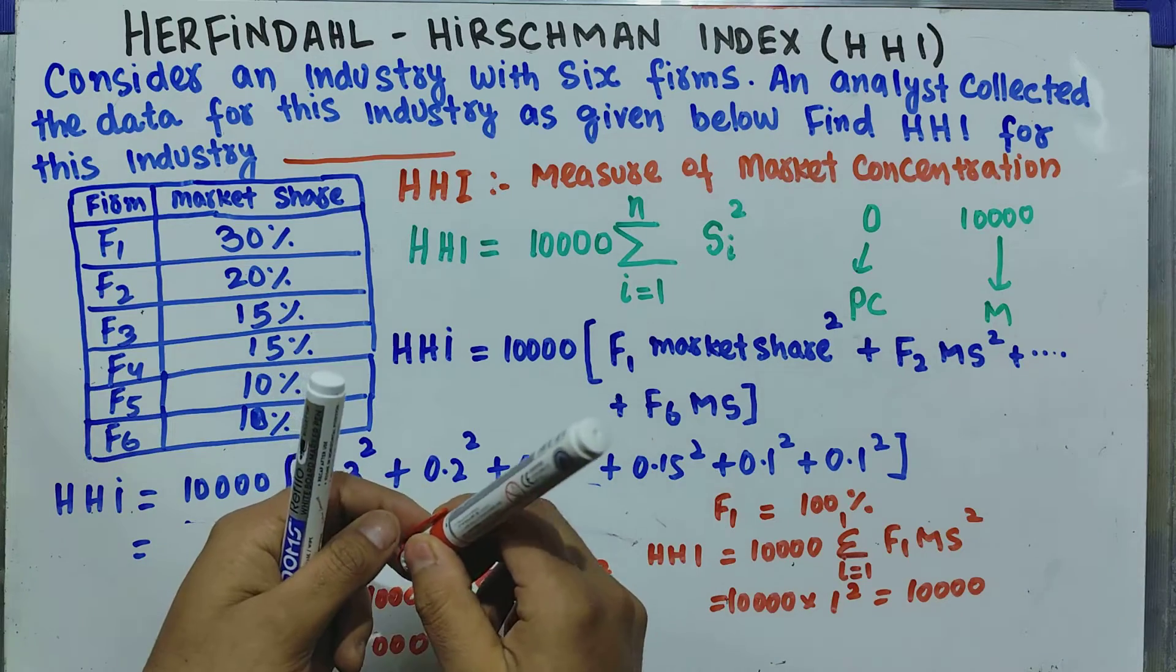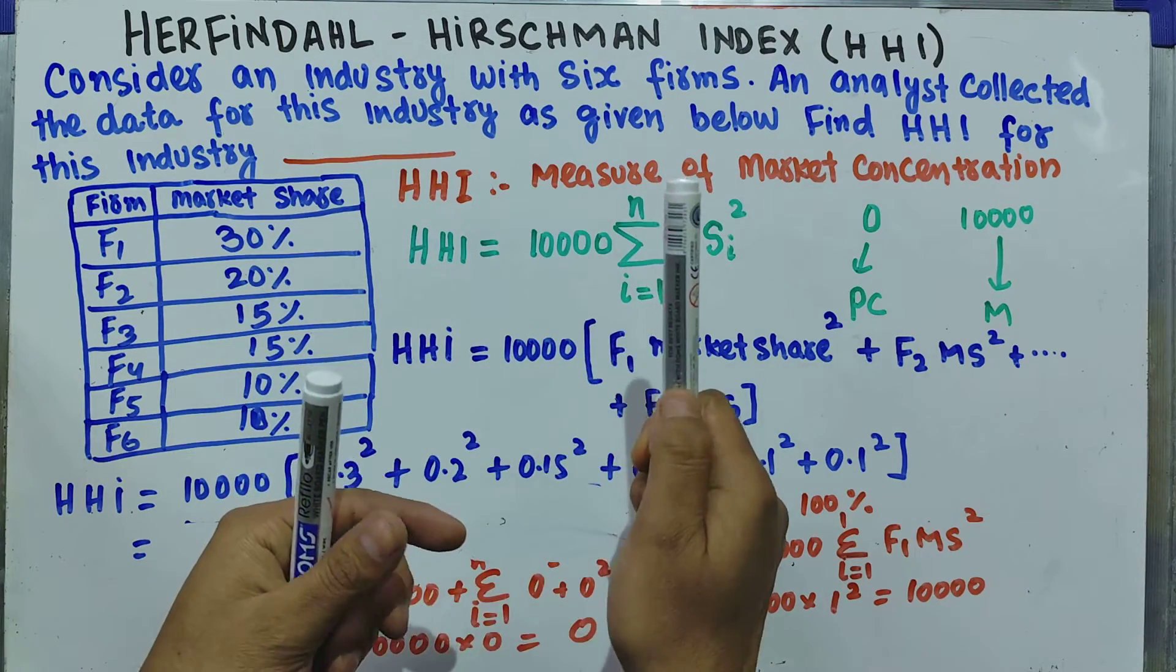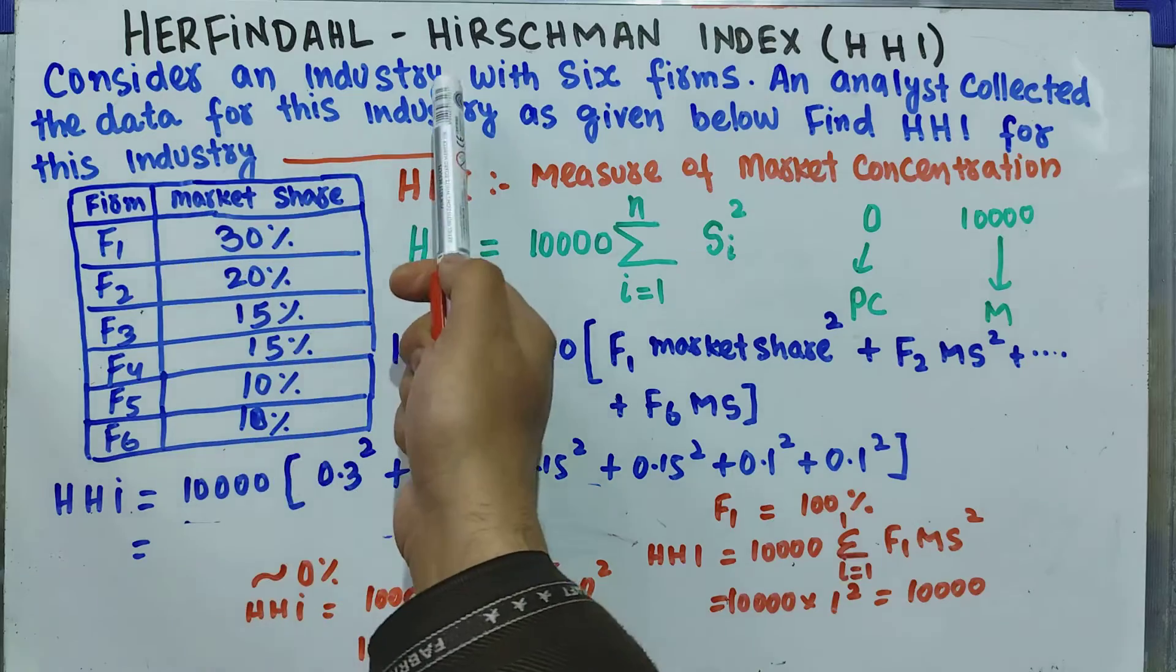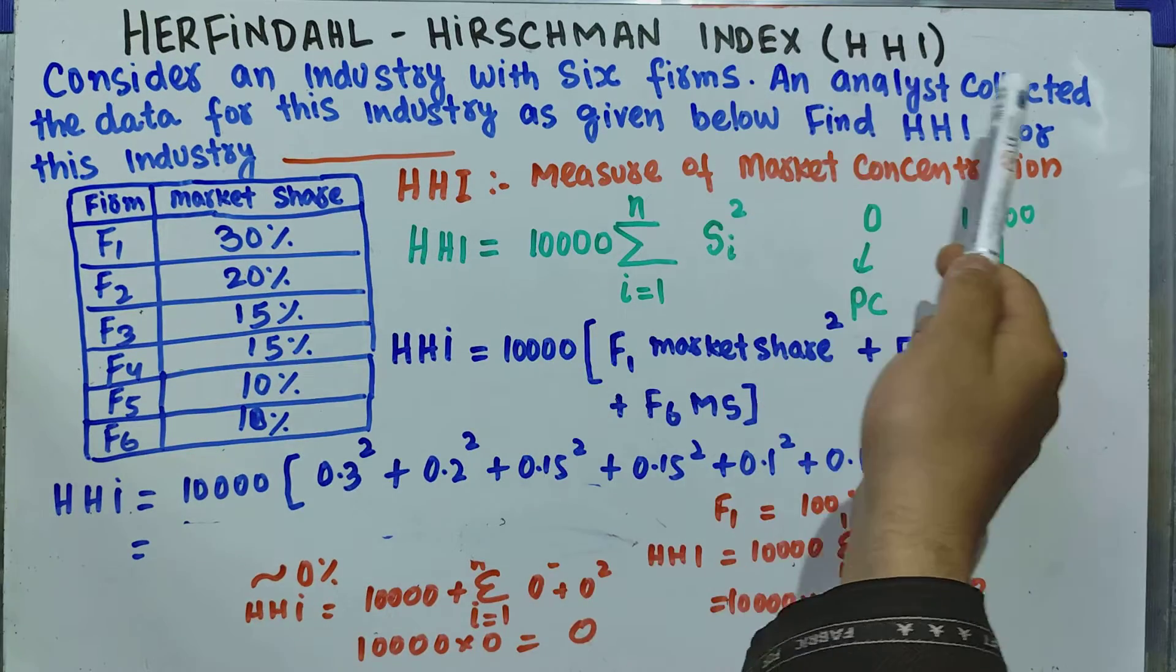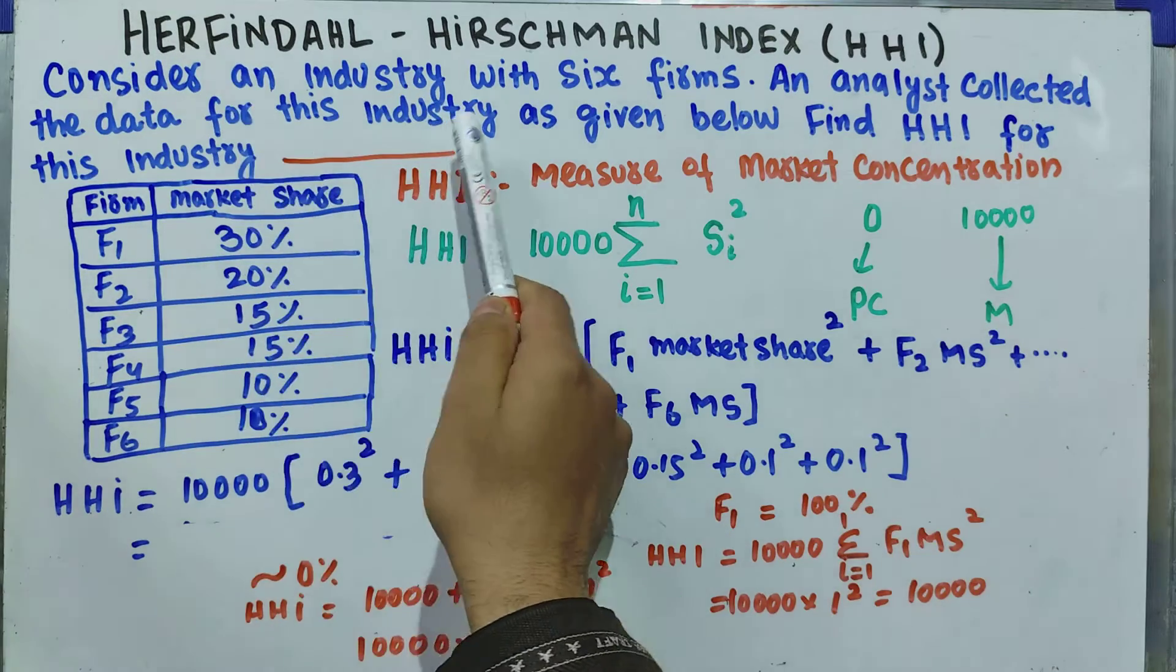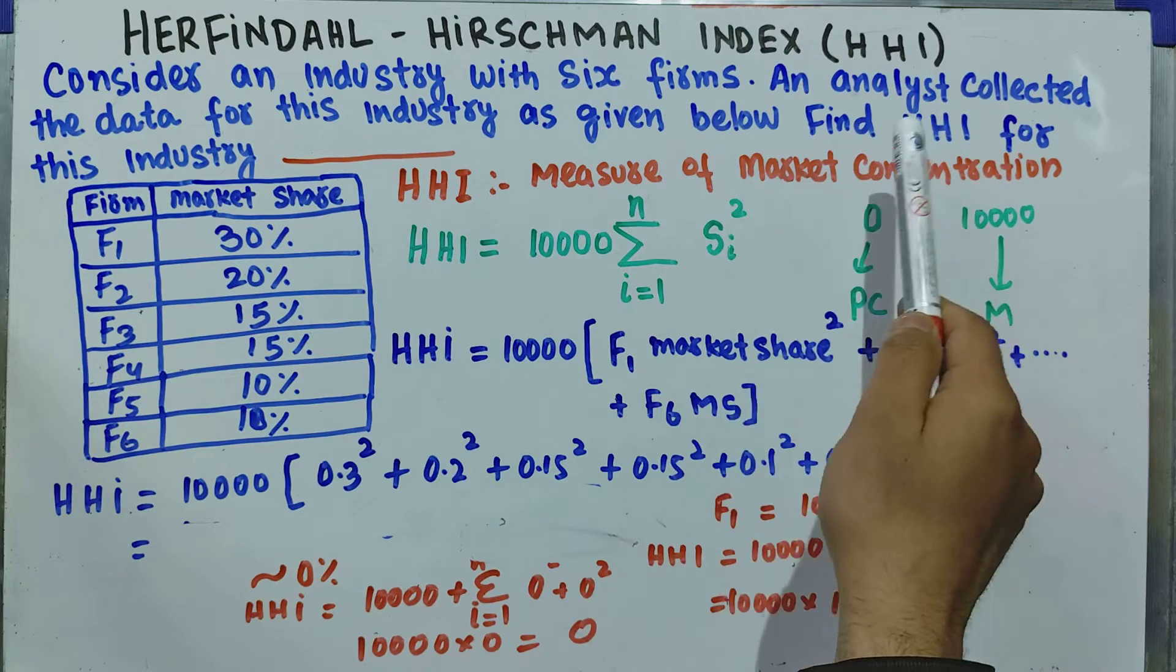In this video we will learn about the Herfindahl-Hirschman Index with an example. The question is: consider an industry with six firms. An analyst collected the data for this industry as given below. We have to calculate the Herfindahl-Hirschman Index for this industry.